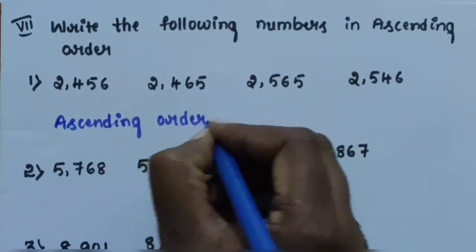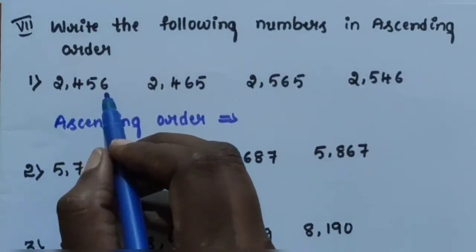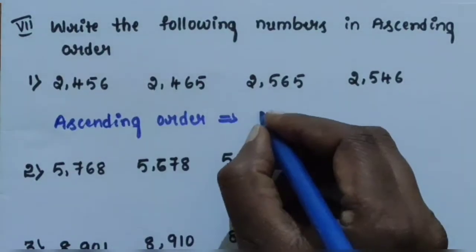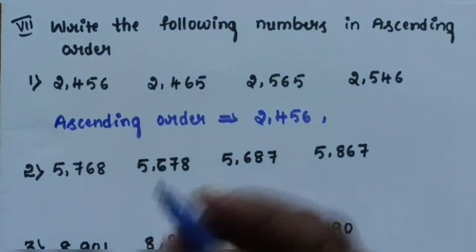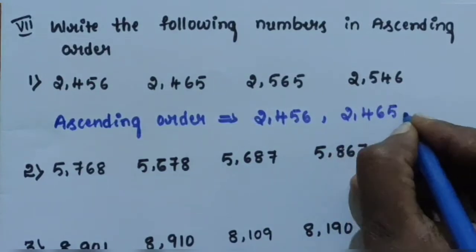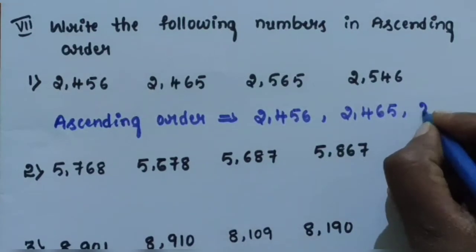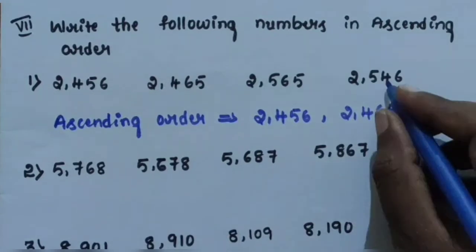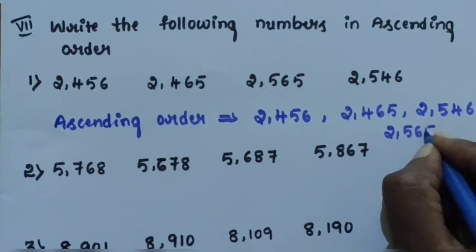Ascending order for question 1: 2,456 is the smallest number. So the order is: 2,456; 2,465; 2,546; and 2,565.